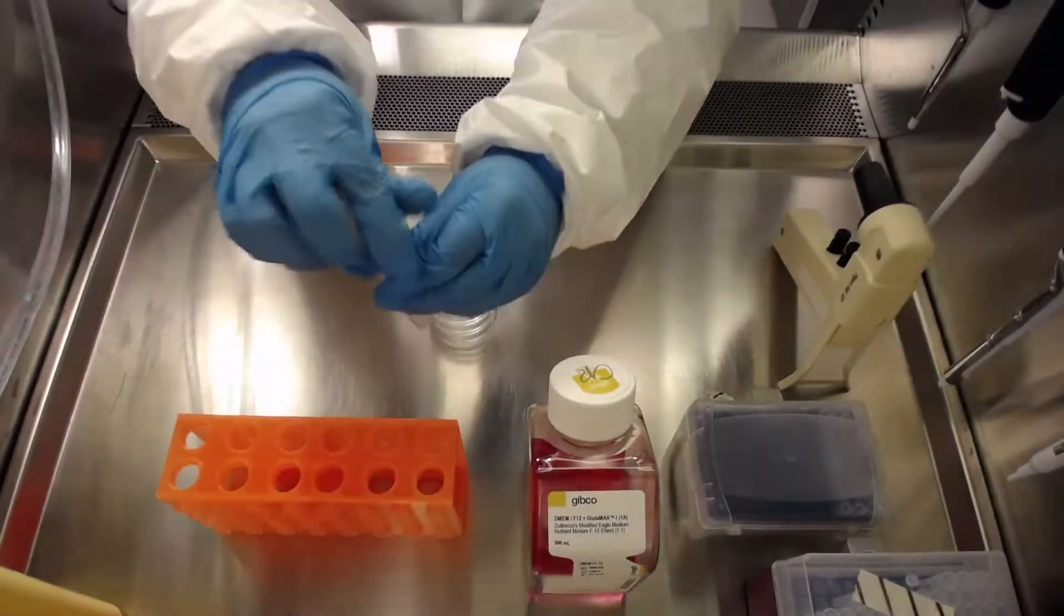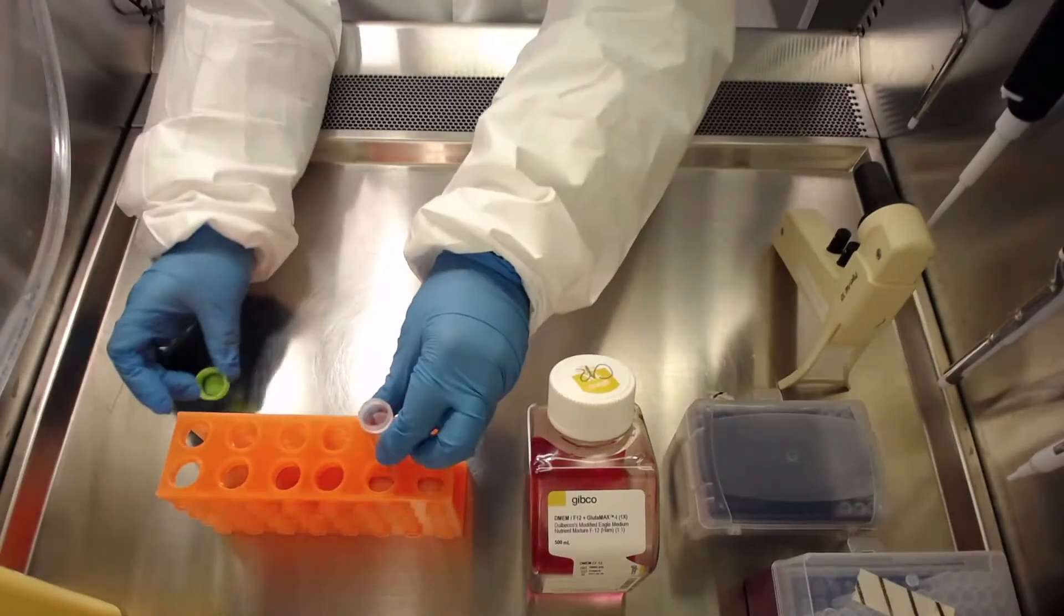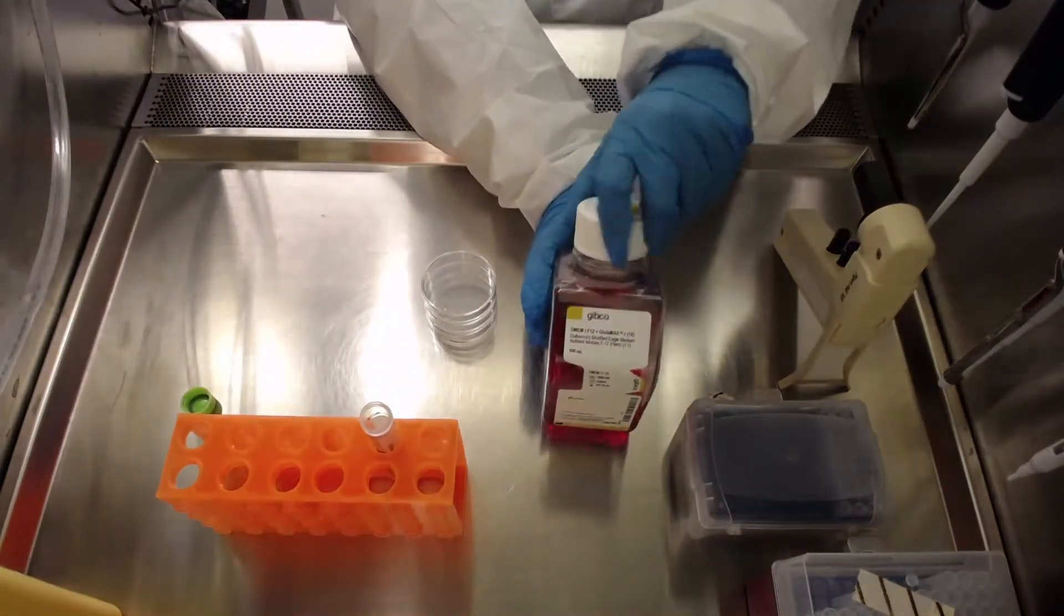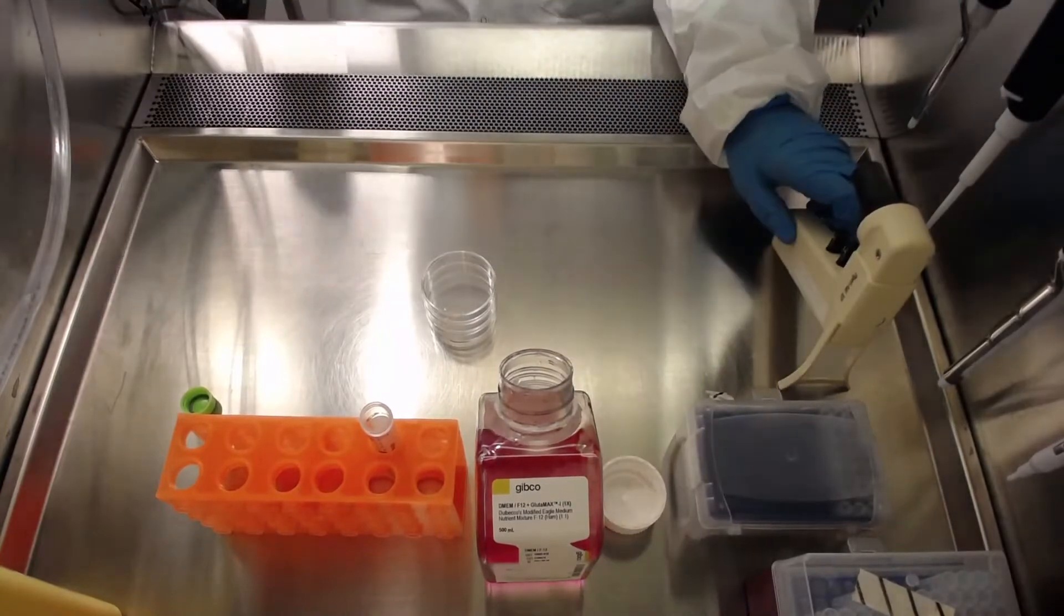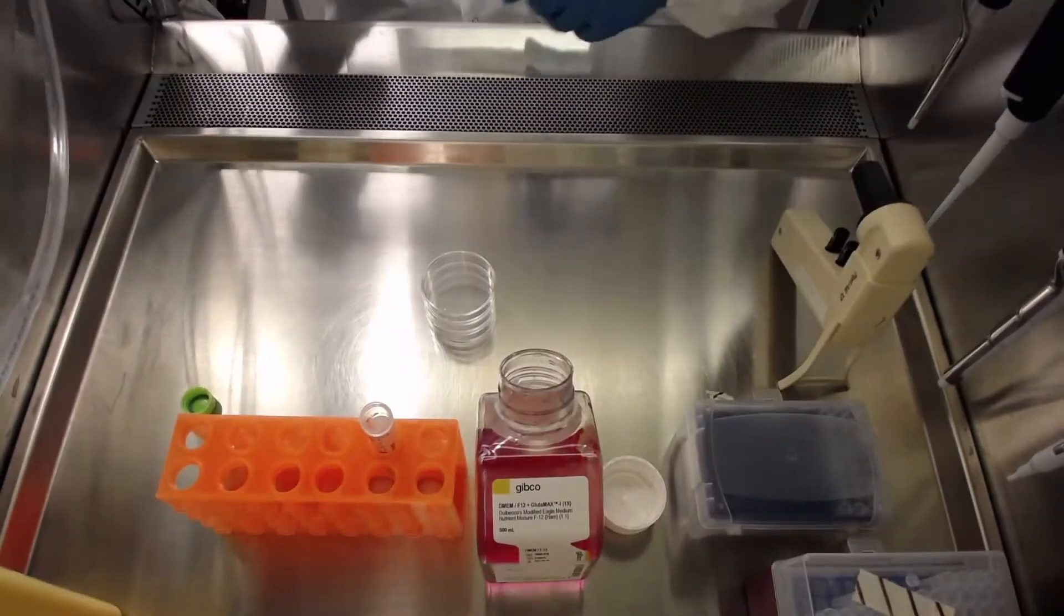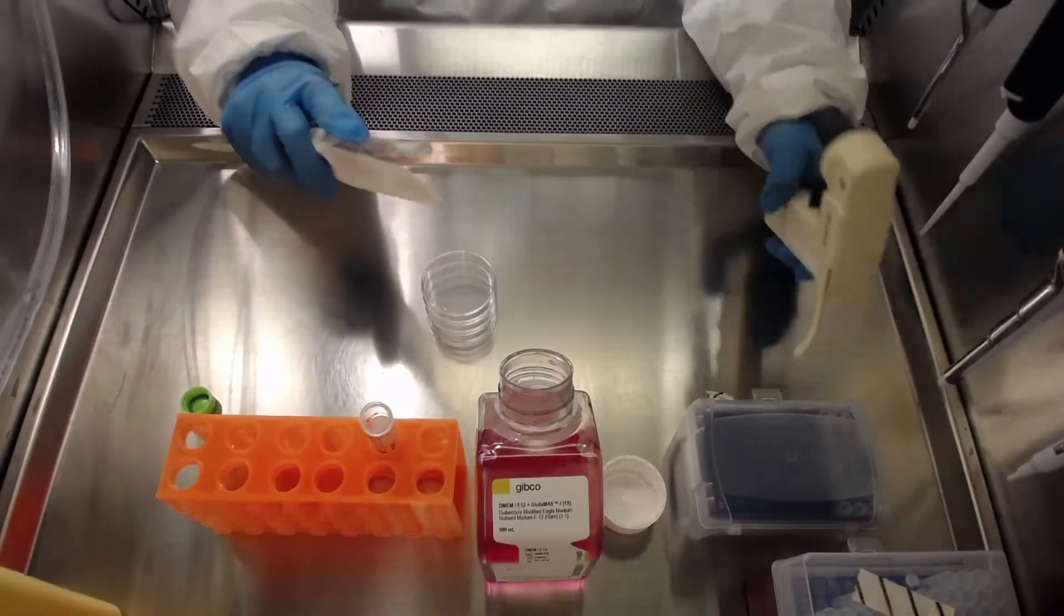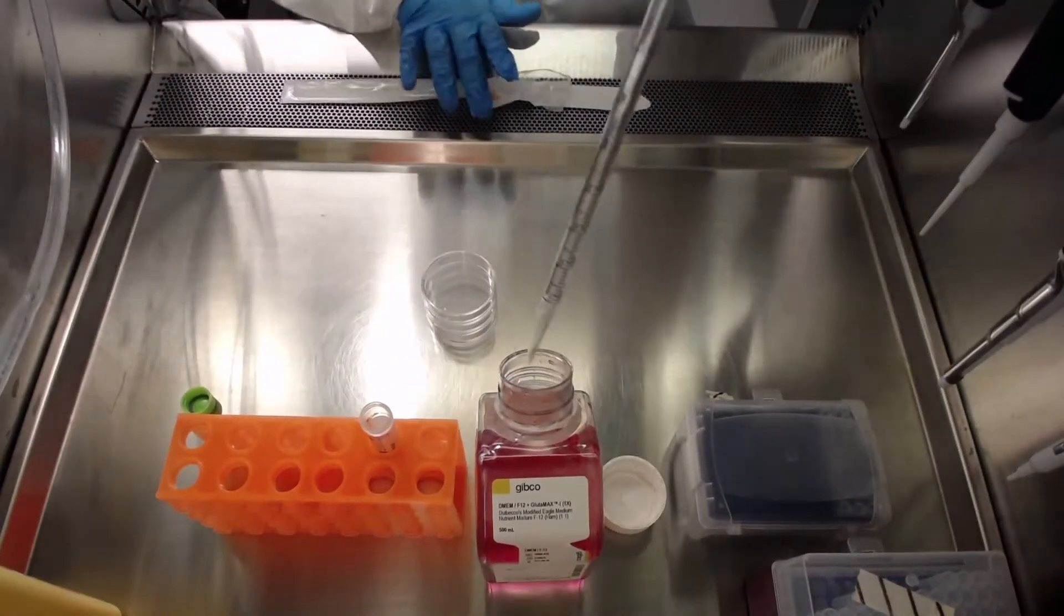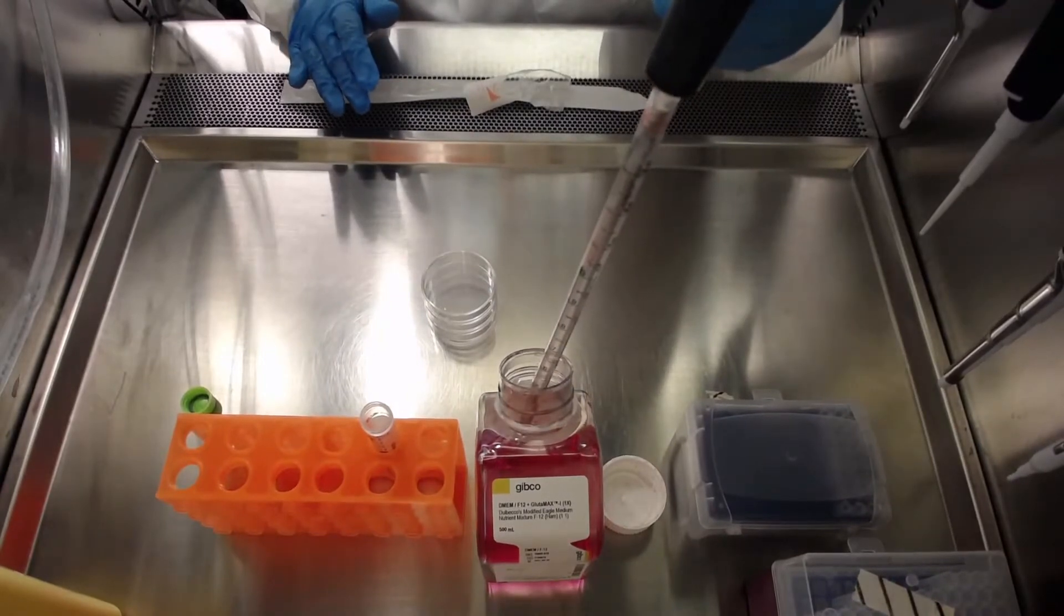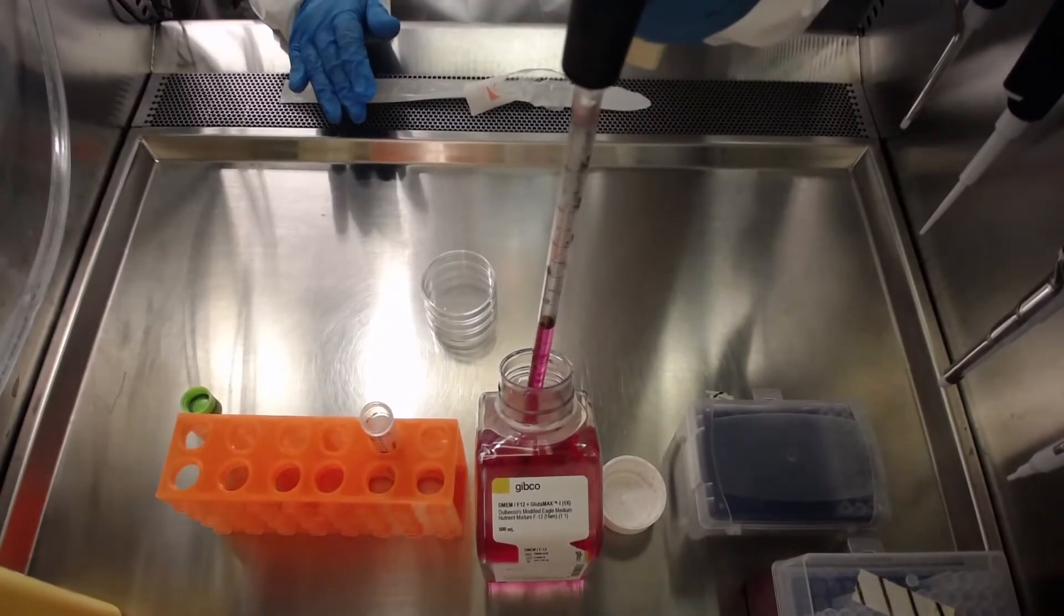Each aliquot of matrigel is dissolved in 15 ml of cold DMEM with anti-anti to reach a 1 in 100 dilution. Open the sterile conical tube and using a sterile pipette, transfer 15 ml of cold DMEM with anti-anti into the tube.